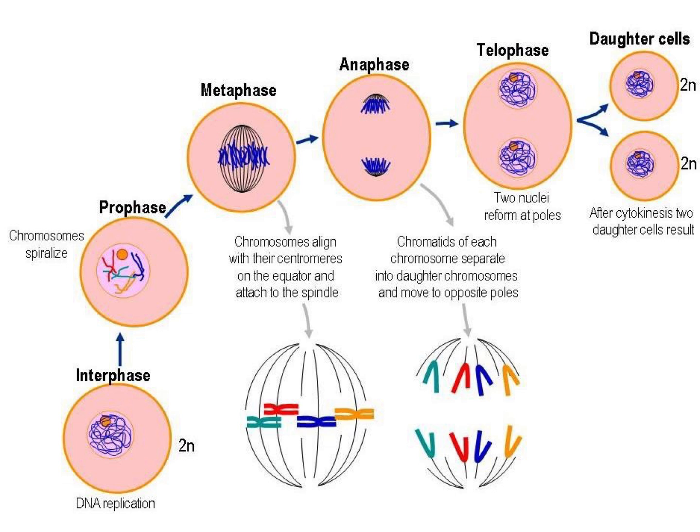Looking at more pictures of the process, starting with interphase at the bottom left: then prophase where chromosomes become visible, metaphase where chromosomes line up in the middle, anaphase where chromosomes are pulled apart, telophase where two nuclei reform, and finally cytokinesis when the cell membrane pinches together and forms two brand new cells, both genetically identical to the first cell.